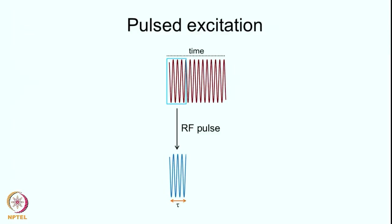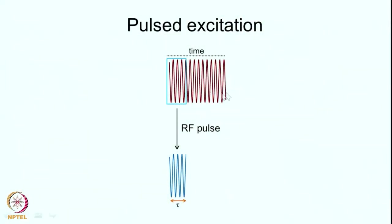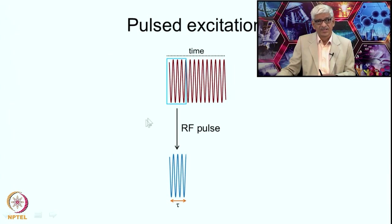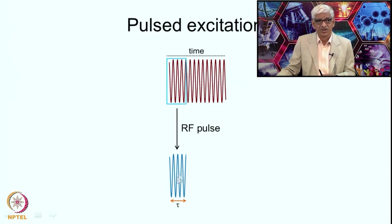So what do we do? There is a new strategy: instead of sweeping the field, keep the field constant and apply all the frequencies in one go — generate so many frequencies simultaneously so that one or another frequency matches the resonance condition and you achieve excitation of all the spins at once. This is termed pulse excitation. You have the RF going as a sine or cosine wave, but you apply it only for a short period of time — you start and cut it off — and we call this the pulse, applied for a period tau.